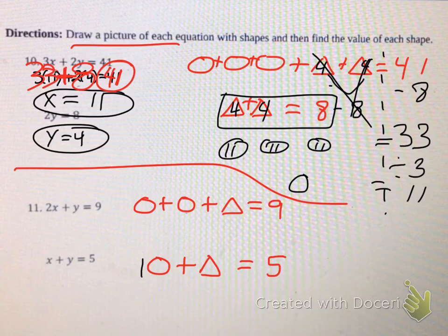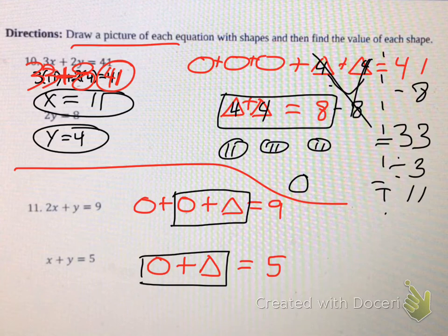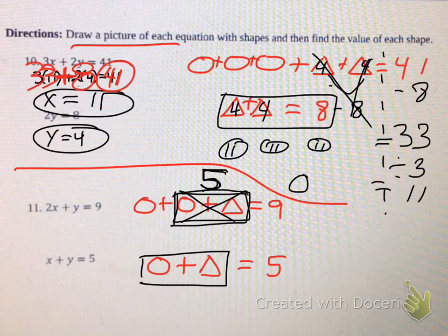So check this out. Look, I've got a circle and a triangle equals five. So don't I have a circle and a triangle right here? So if a circle and a triangle equals five, can I just put a five right here? Just like totally replace all that with five. So now it's just, use your noodle.